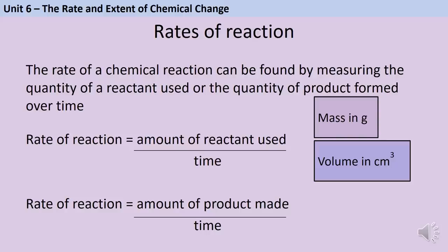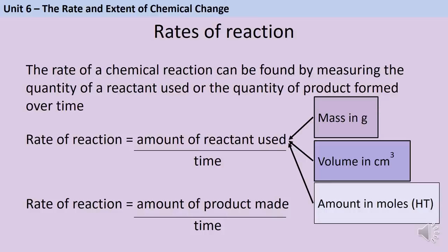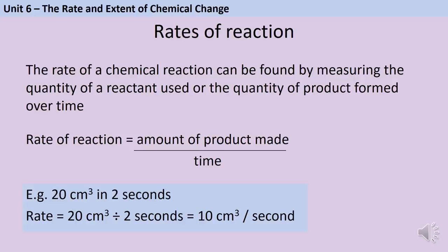The first topic in Paper 2 is the rate and extent of chemical change. The rate of a chemical reaction is its speed — how fast it's going — and we can measure this in two ways: how quickly the reaction uses up reactants, or how quickly it makes products. The calculation is an amount divided by time. That amount can be a mass in grams or a volume in centimetres cubed, and at higher tier you can also express rate in moles per second.